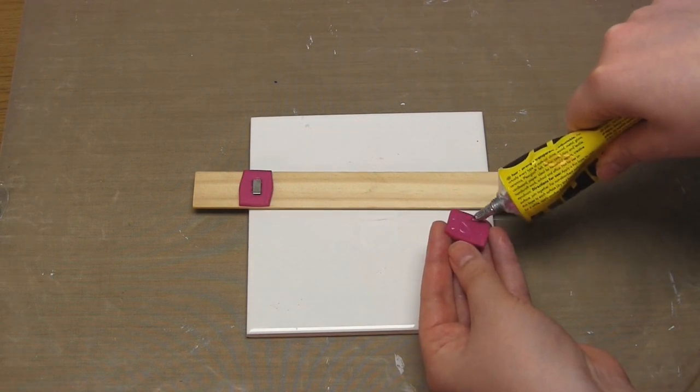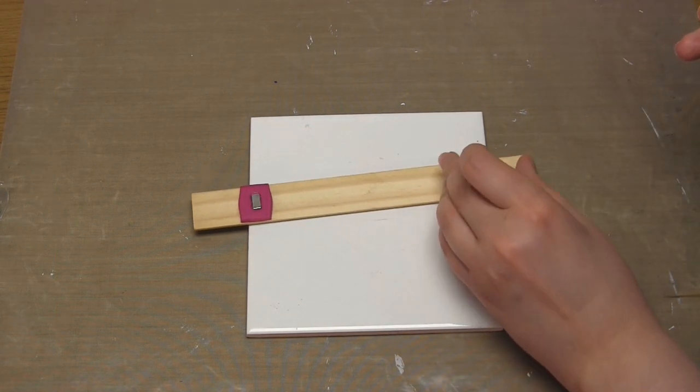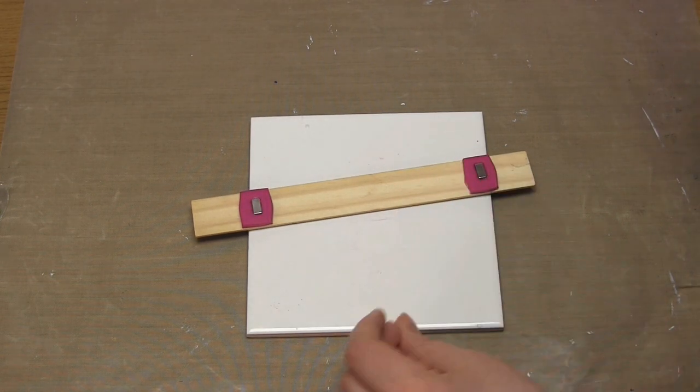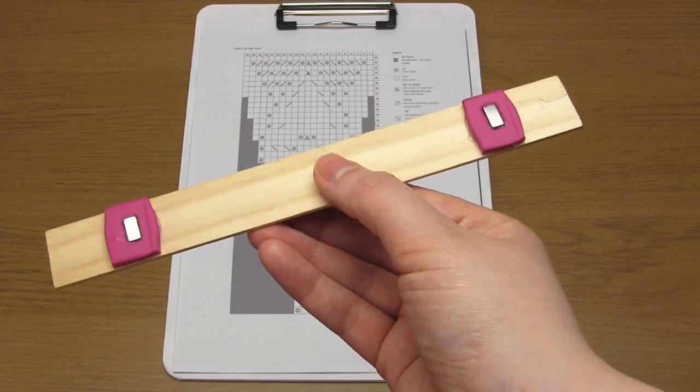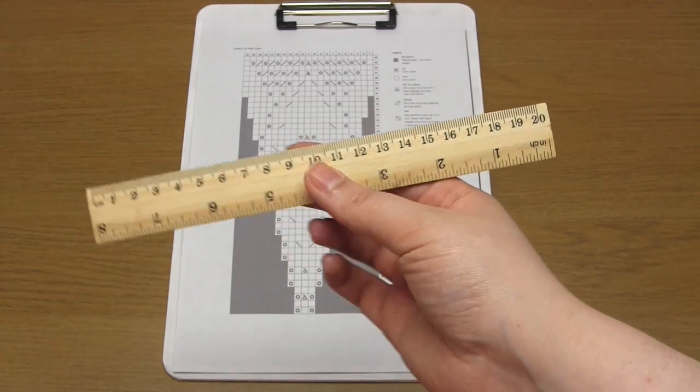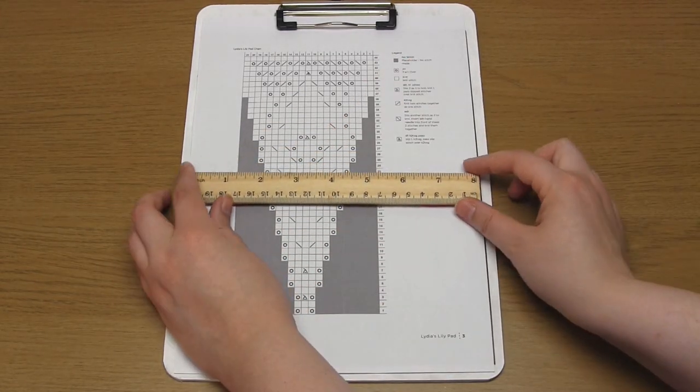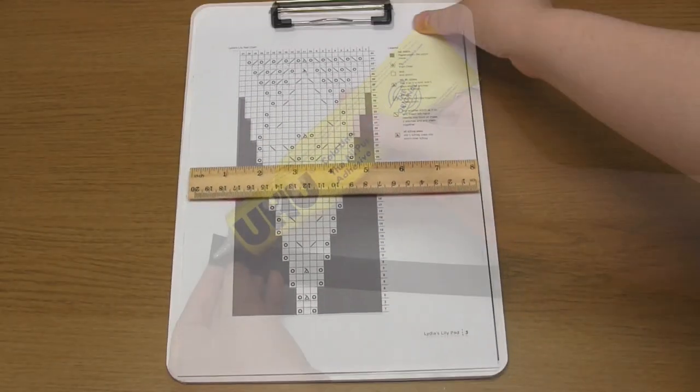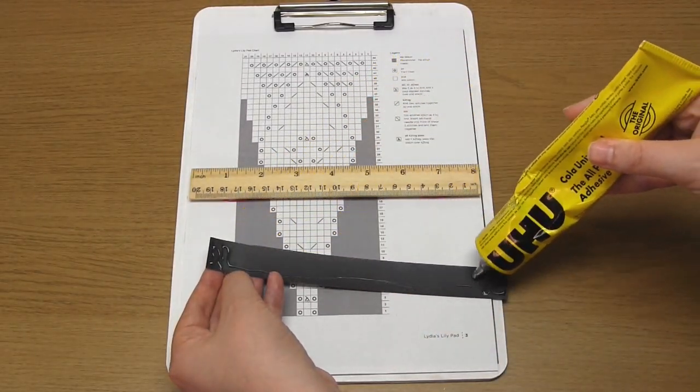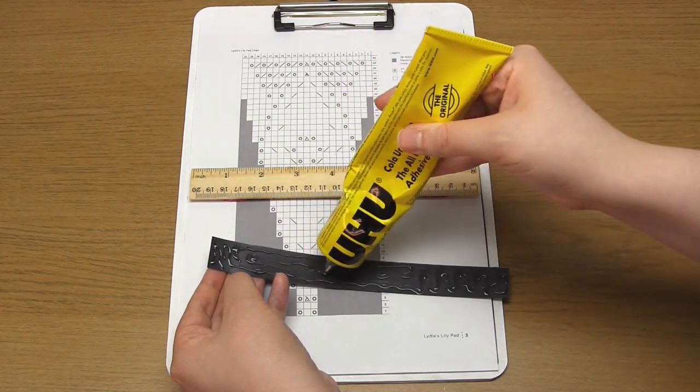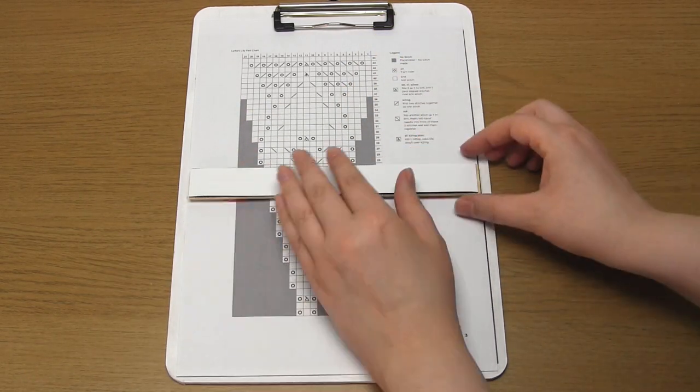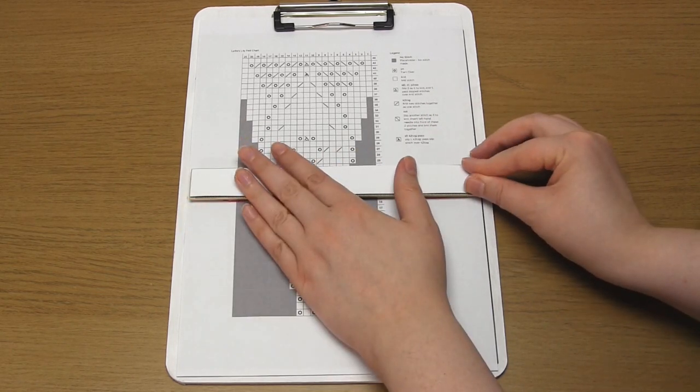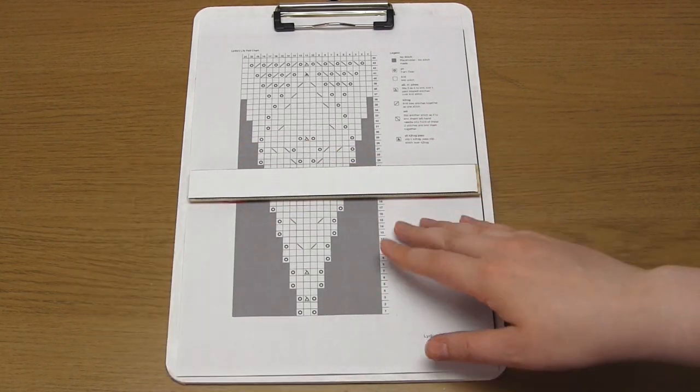The last two steps are to glue the feet onto the wooden ruler like so, and then glue a strip of dry erase sheet onto the front, and that's it—the chart holder is now complete.